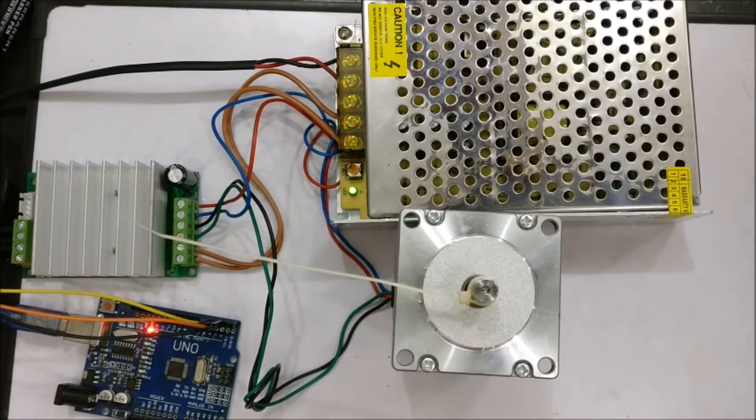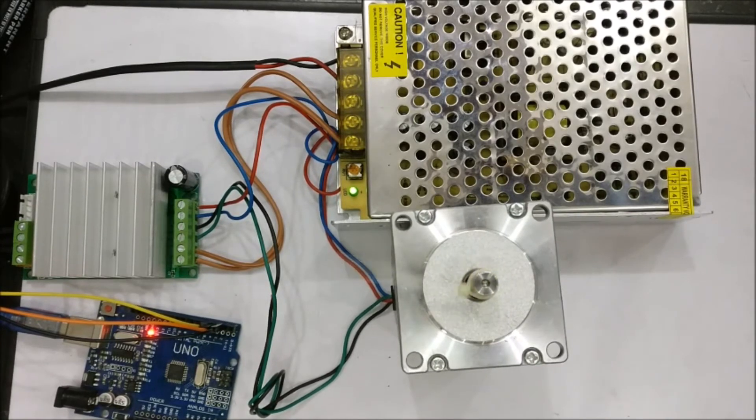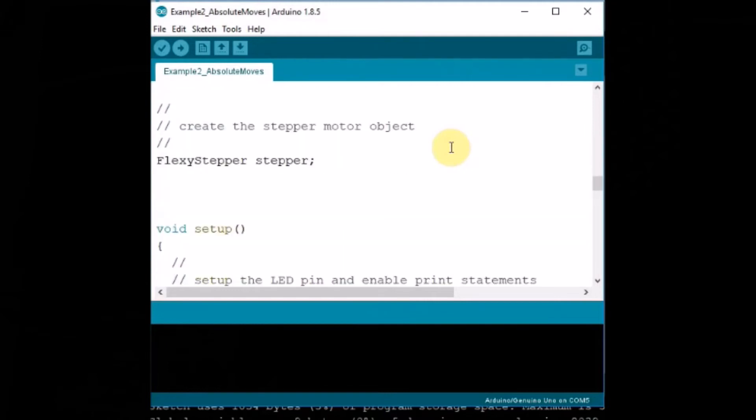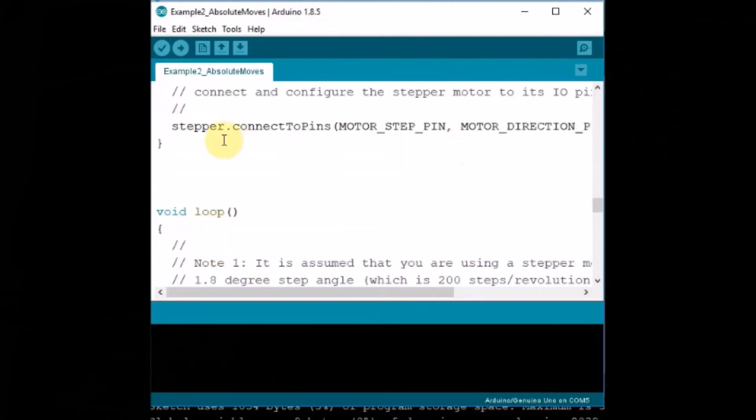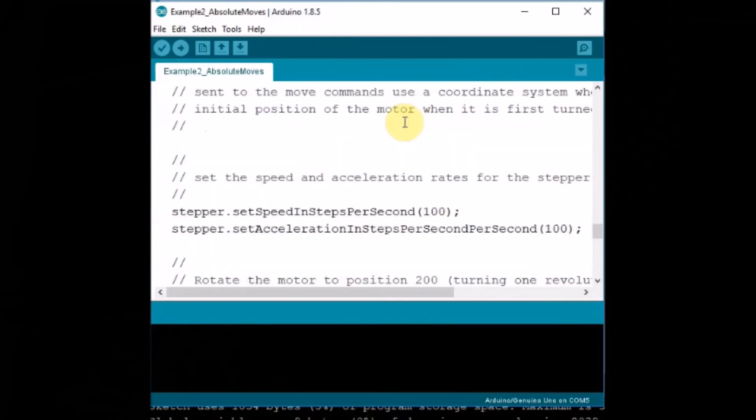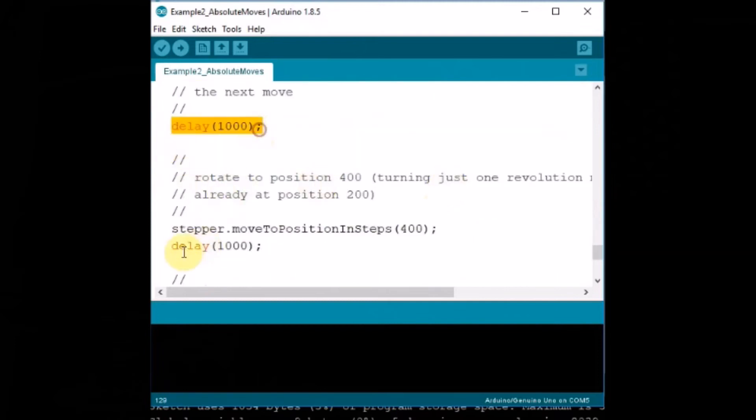Now let us see the second example. The second example is absolute moves. From flexi stepper examples, select the second example absolute moves. Inside this, we include the flexi stepper.h header file. And then the step pin is declared as 3 and motor direction pin is 4. As in the previous example. And then stepper object is created as stepper. We use the connect to pins class and assign the step pin and then direction pin.